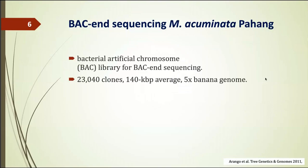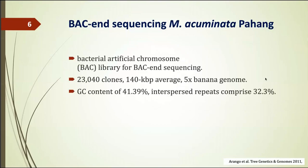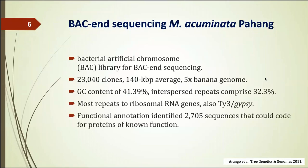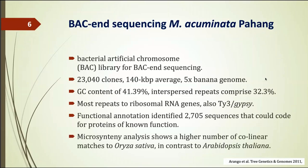The first work done by the lab of Arango was a nice publication in which they studied 23,000 clones with, on average, an insert of 140 KB — quite big. They found a lot of ribosomal genes, and you also see a lot of gypsy elements around the centromeres. Not surprisingly, they conclude there is microsynteny showing a high number of collinearity with Oryza sativa and not with Arabidopsis — which of course no one is surprised about.